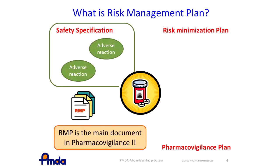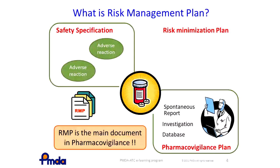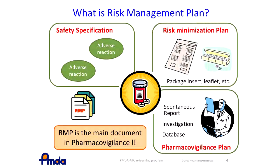1. Safety specification: characterization of the safety profile of the medicinal product, including what is known and not known. 2. Pharmacovigilance plan: planning of pharmacovigilance activities to characterize and identify new risks, and increase the knowledge in general about the safety profile of the medicinal product. 3. Risk minimization plan: planning and implementation of risk minimization and mitigation activities and assessment of the effectiveness of these activities.